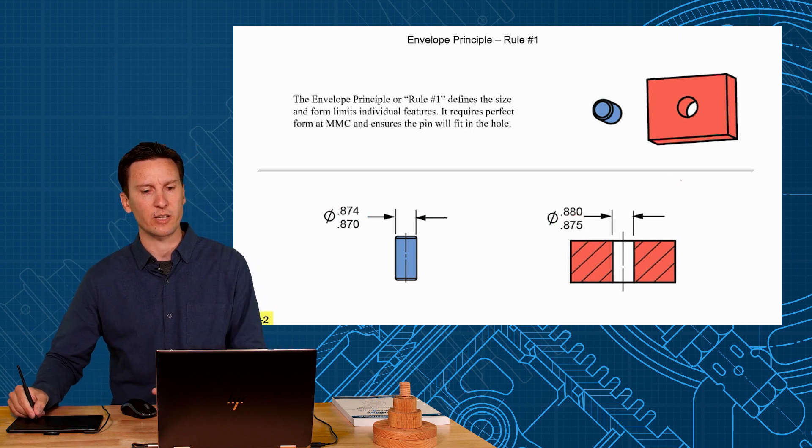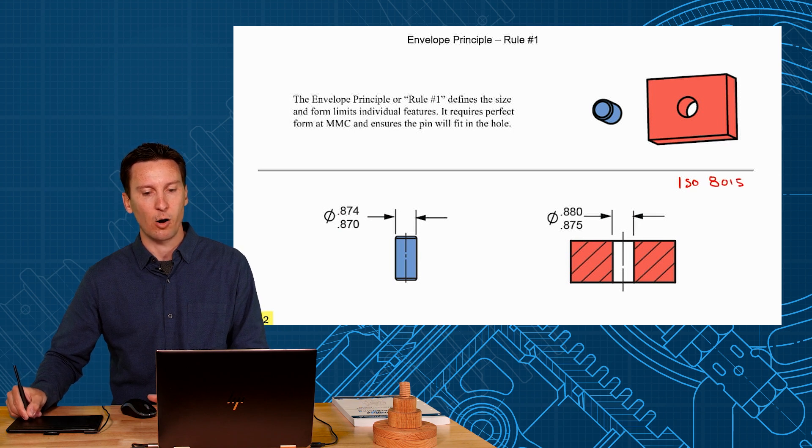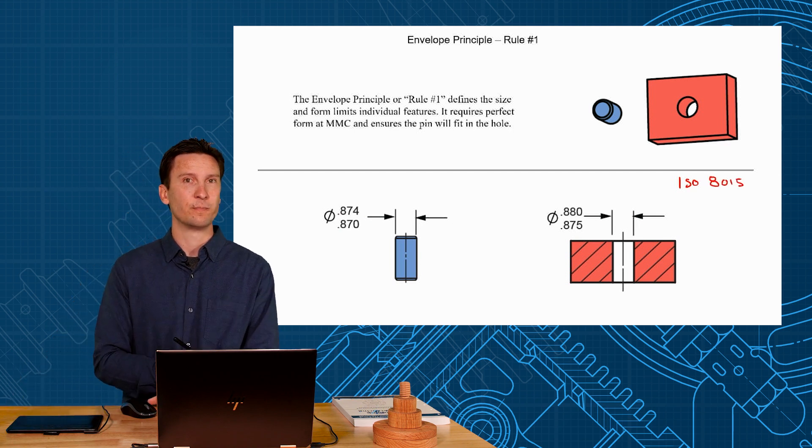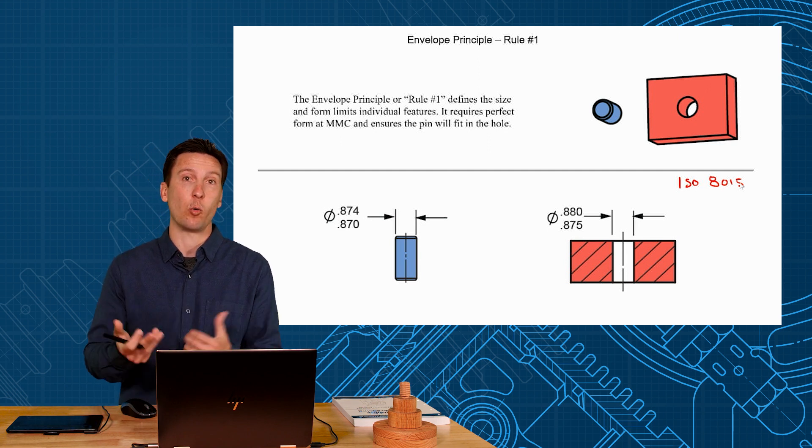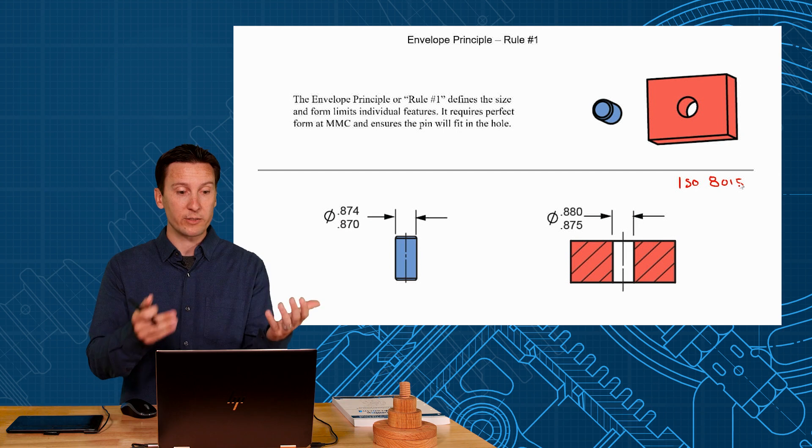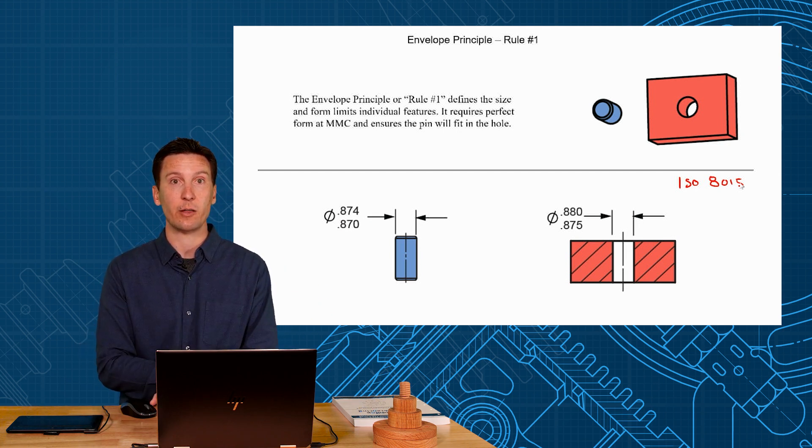But what if this drawing says no I want this interpreted per ISO 8015, are they guaranteed to fit together? Not necessarily because we're not requiring perfect form by default. So if you want to guarantee the fit between the two pieces how would you get them to go together?